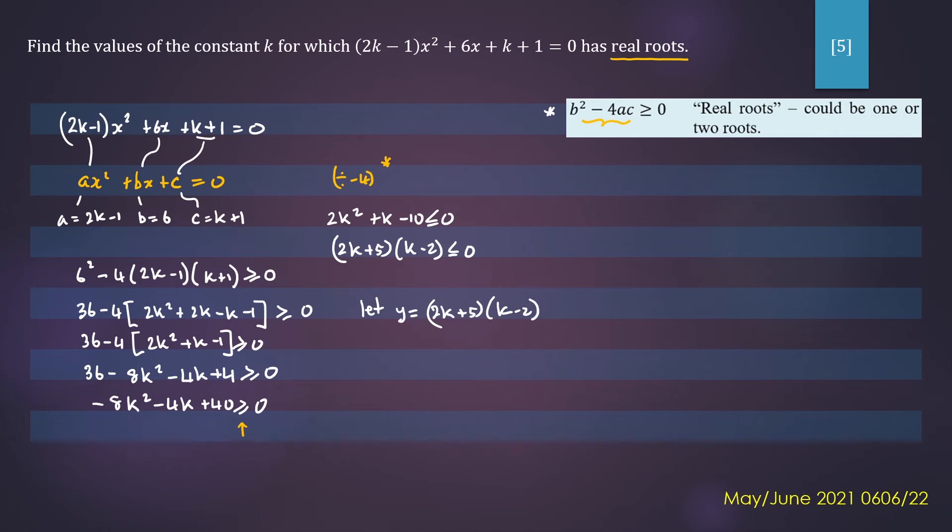To find the x-intercepts, we'll have (2k + 5)(k - 2) = 0. The k will be equal to -5/2 and 2. This value here is positive, so your graph is going to open upwards.